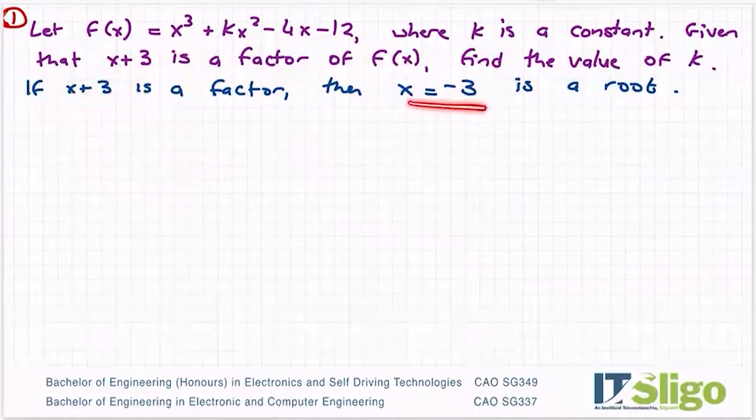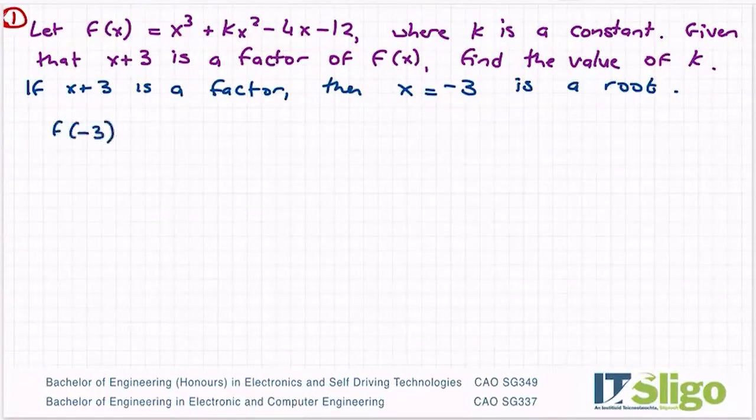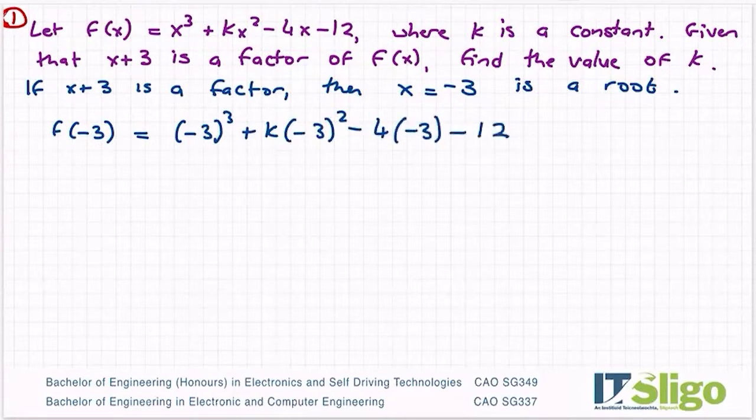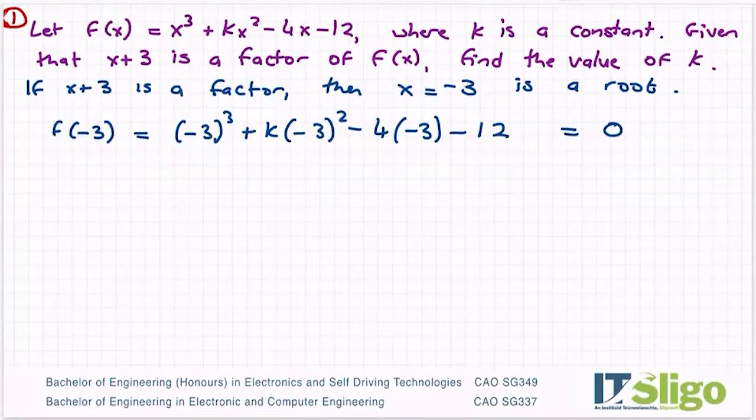Why did I bother doing that? Well, if I sub in x equals minus 3 in this equation, it should satisfy it. And by that, I mean it should go in evenly. So we can say then that f(-3), so I'm subbing in minus 3, replacing x with minus 3, would be equal to (-3)³ + k(-3)² - 4(-3) - 12. And that of course should be equal to zero. There should be no remainder if it satisfies it.